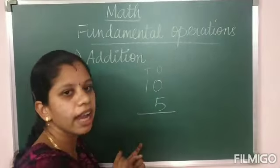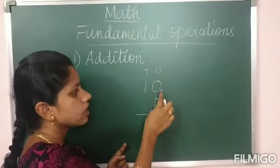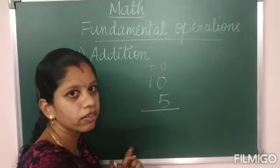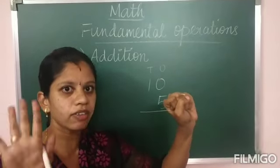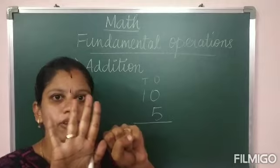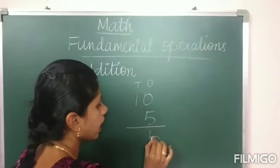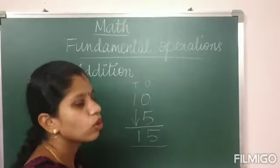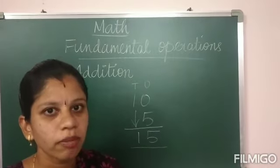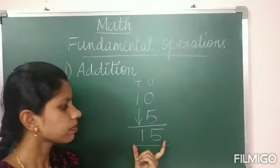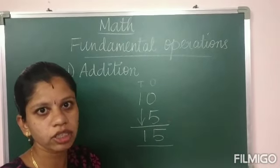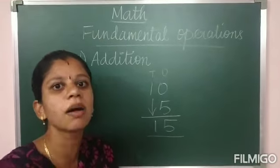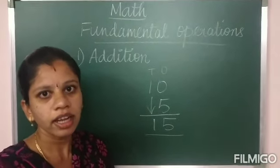First from the ones place you have to add. You have 0 and 5, so 0 plus 5. You have nothing in this hand, 5 in this hand, so total will be 5. In the tens place you have only 1, so totally you and your brother are having 15 apples. That is what addition is — to find the total, to find the sum of anything.